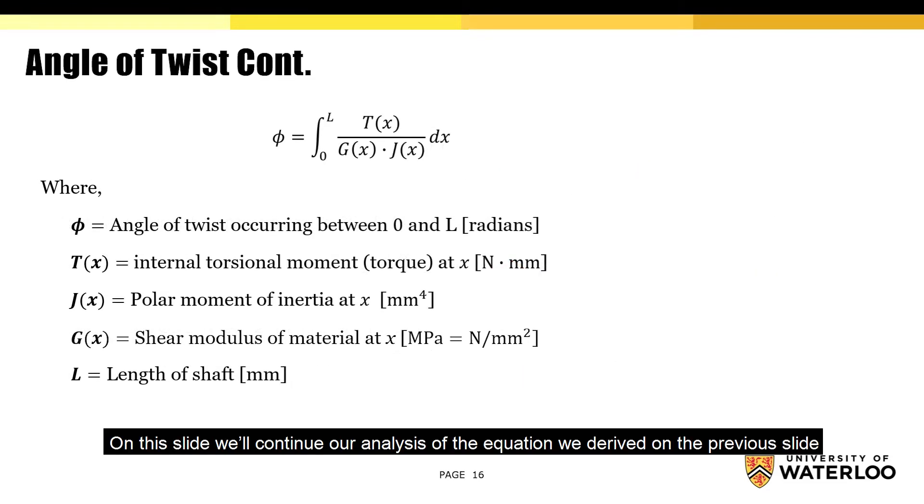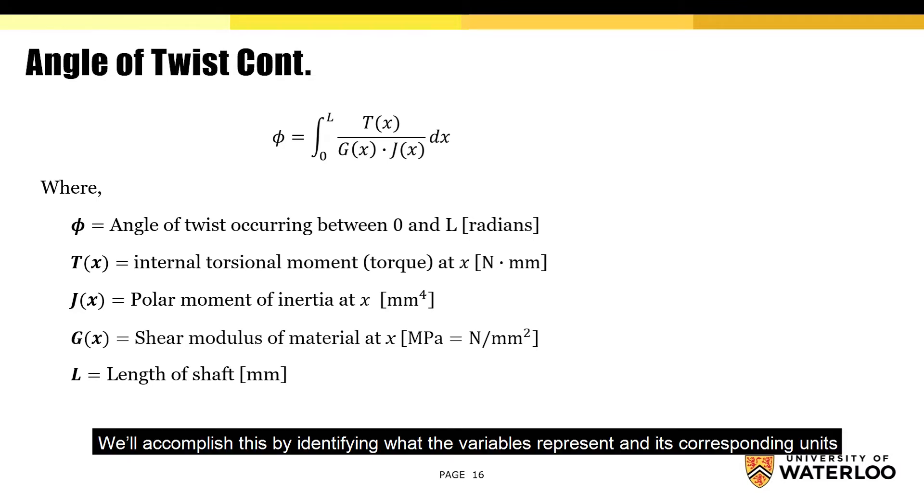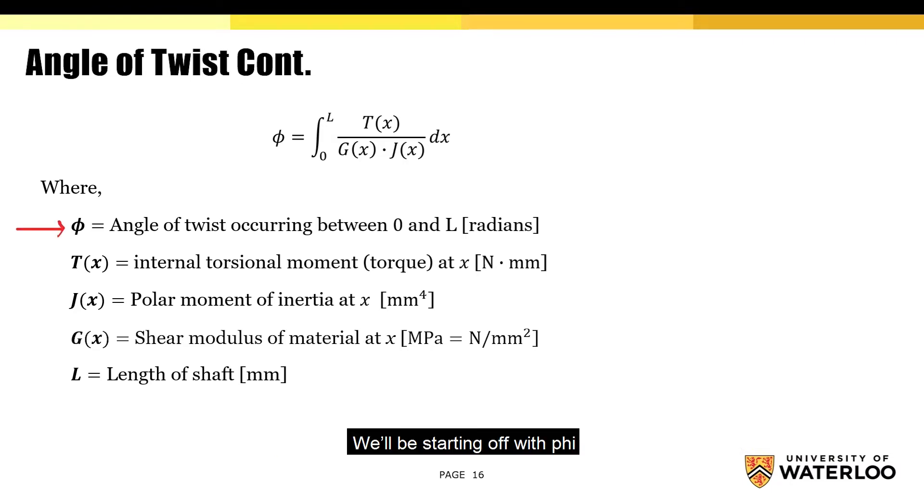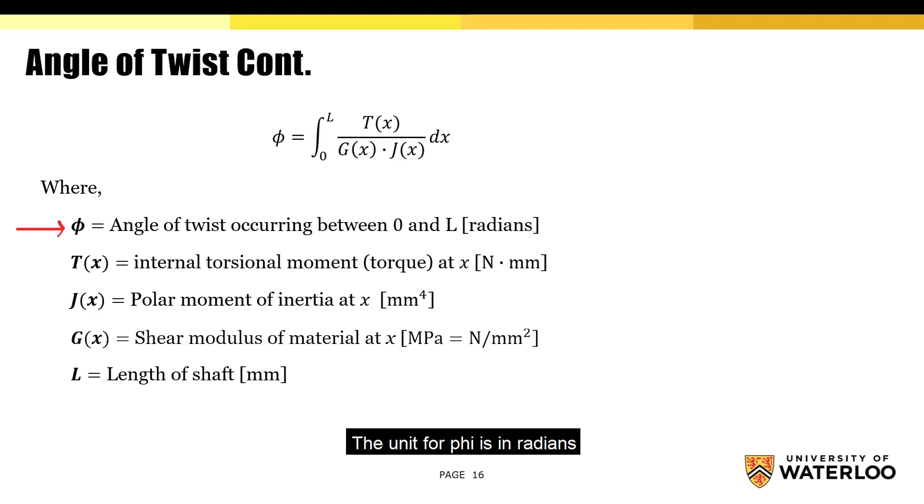On this slide, we'll continue our analysis of the equation we derived on the previous slide. We'll accomplish this by identifying what the variables represent and its corresponding units. We'll be starting off with phi. Phi represents the angle of twist occurring within the shaft between 0 and L. The unit for phi is in radians.